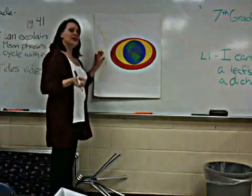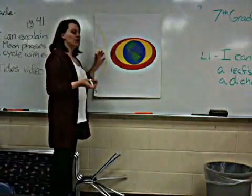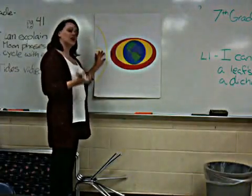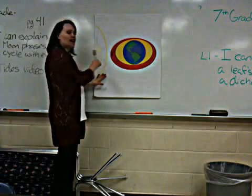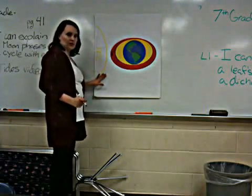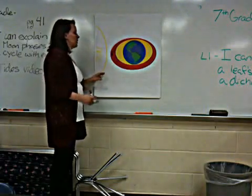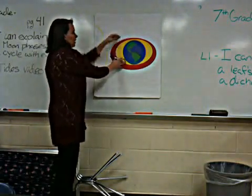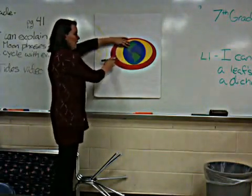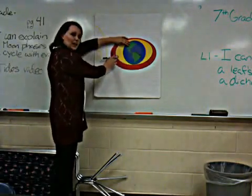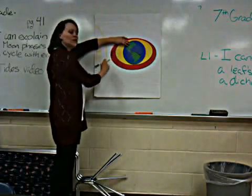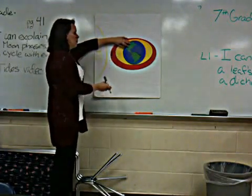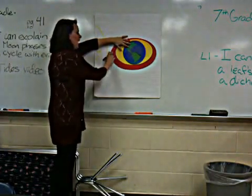However, the Moon isn't the only thing to pull on Earth's water. The Sun also pulls on it. In this diagram, the yellow is the Sun's pull, and the red is the Moon's pull.